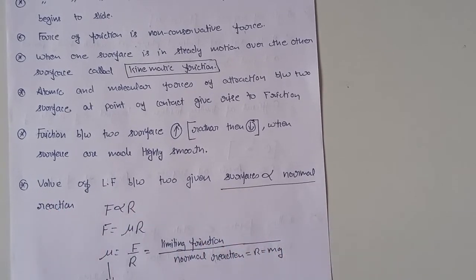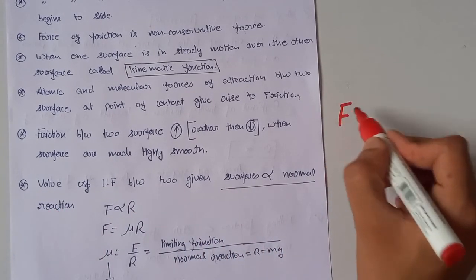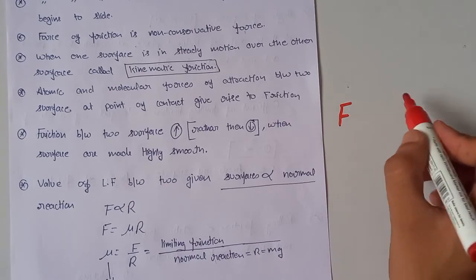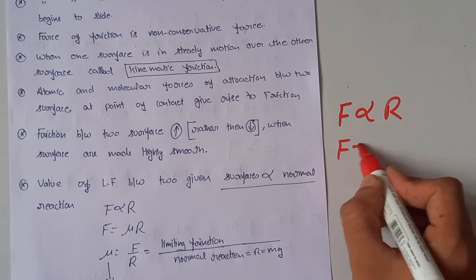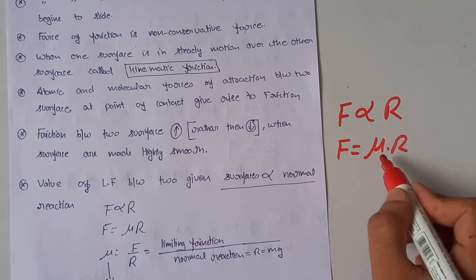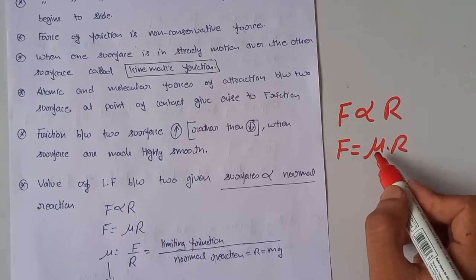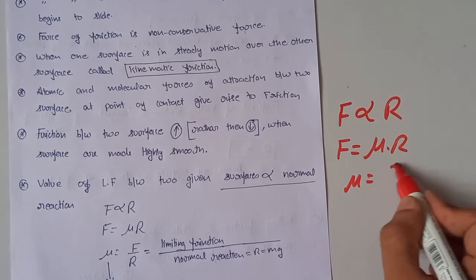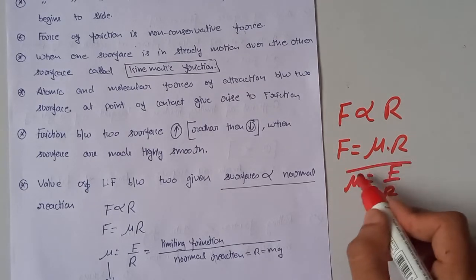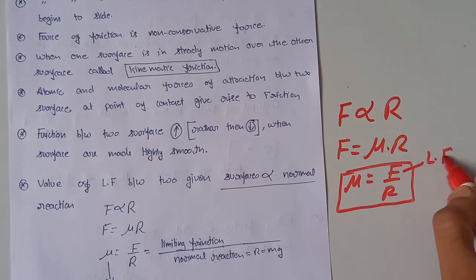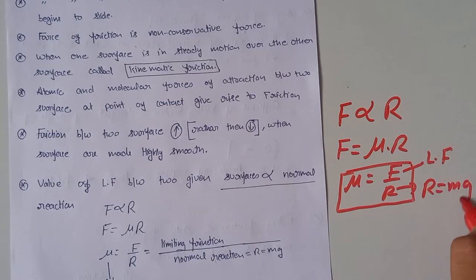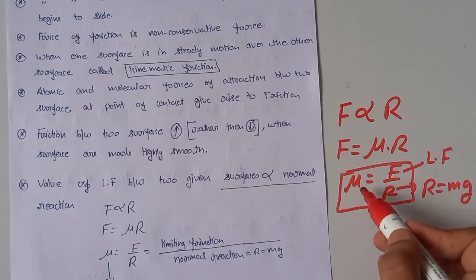The value of limiting friction between two surfaces is directly proportional to the normal reaction. This means F = μR, where μ is the coefficient of friction, equal to f divided by R. Here f is the limiting friction and R is the normal reaction, which is equal to mg.